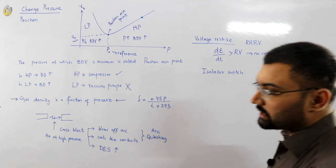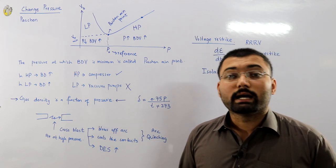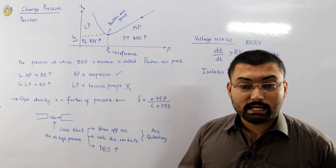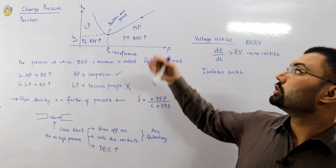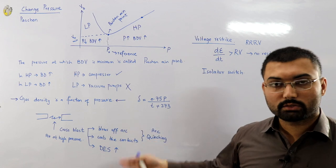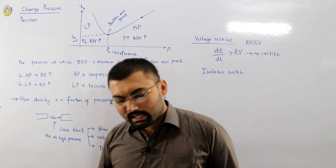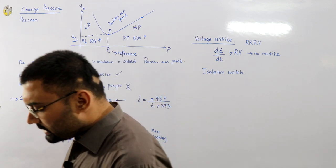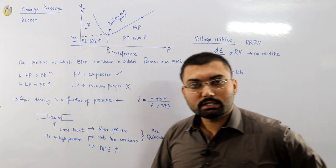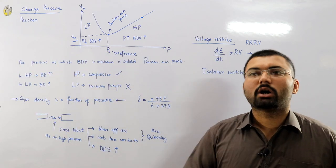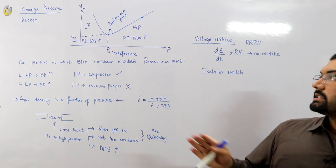We also have the SF6 circuit breaker. SF6 has a high dielectric strength, acts as a coolant as well, and if you increase or decrease the pressure the dielectric strength further increases. Similarly, we have vacuum circuit breakers — on the low density side — and liquid oil circuit breakers as well, which we may see in the liquid dielectrics section.